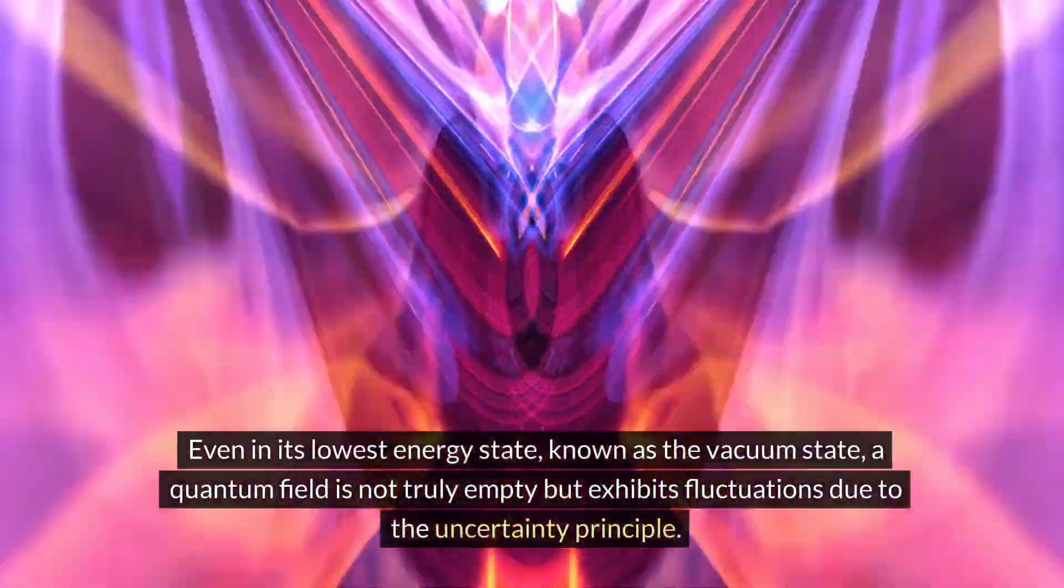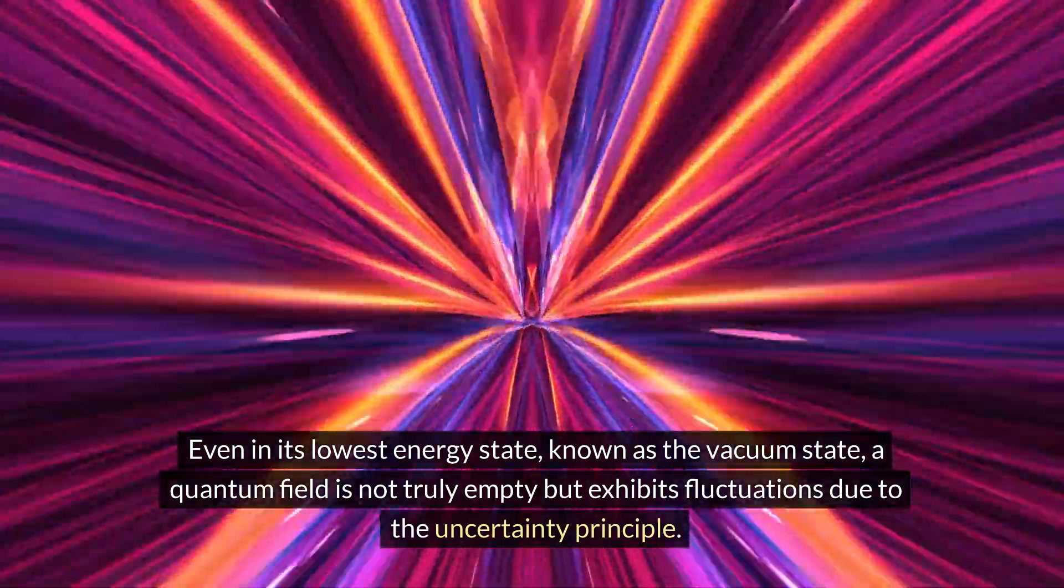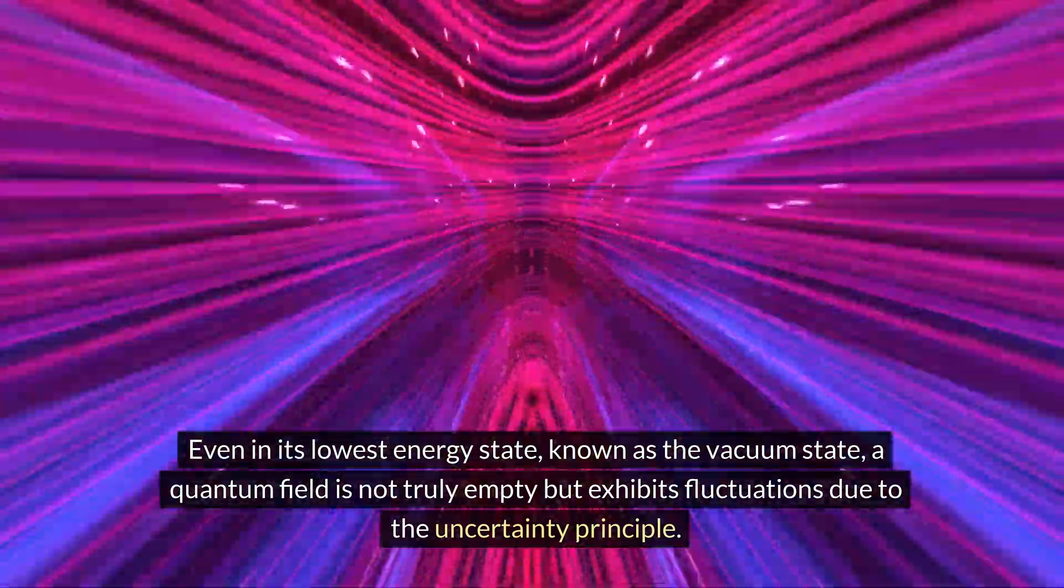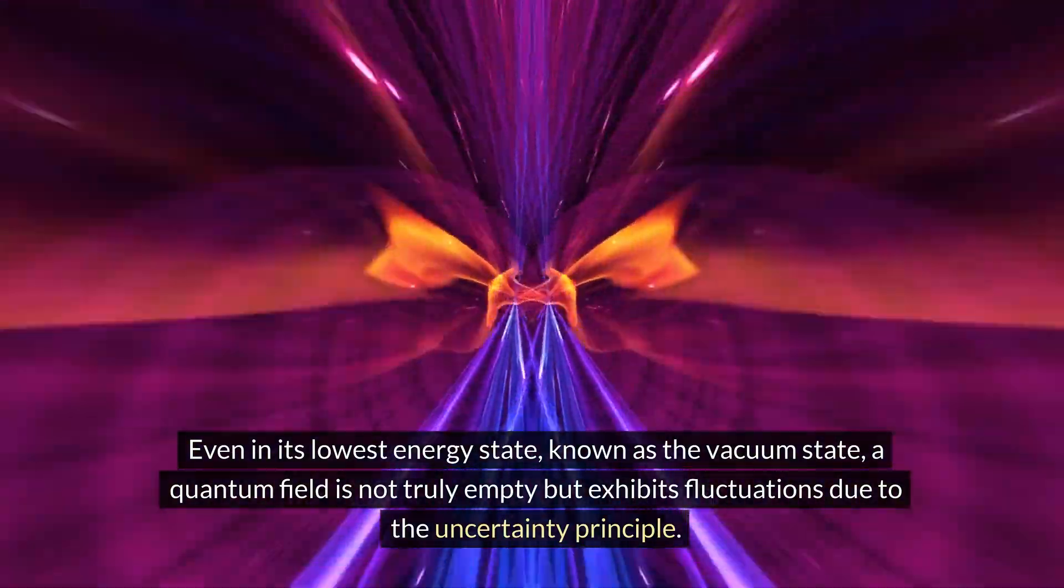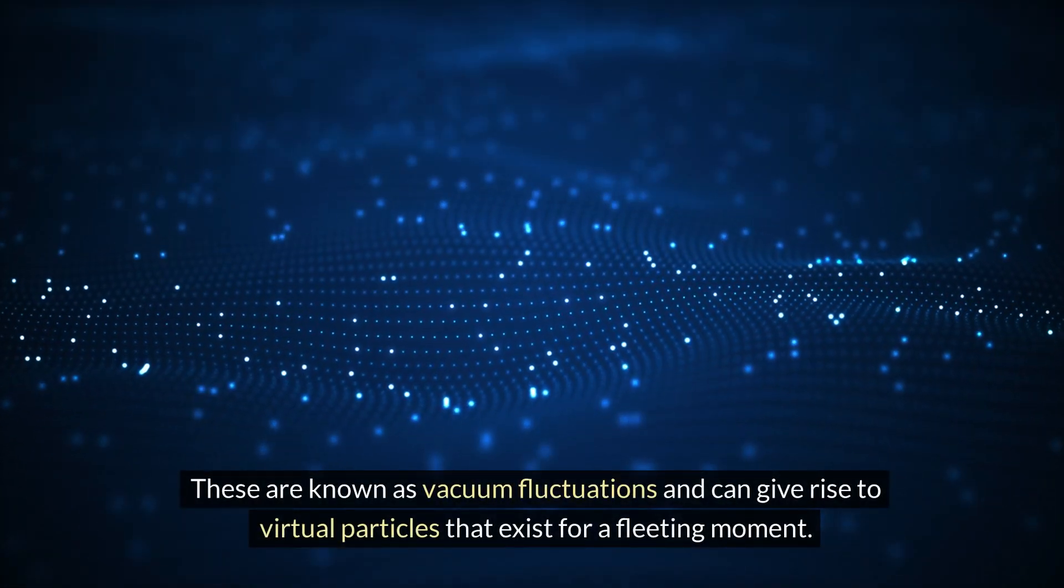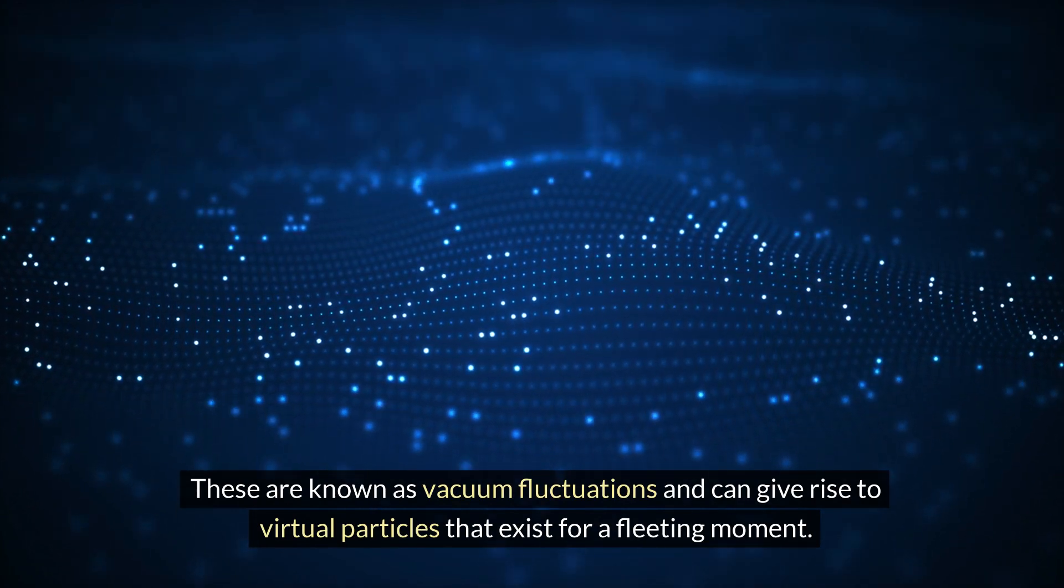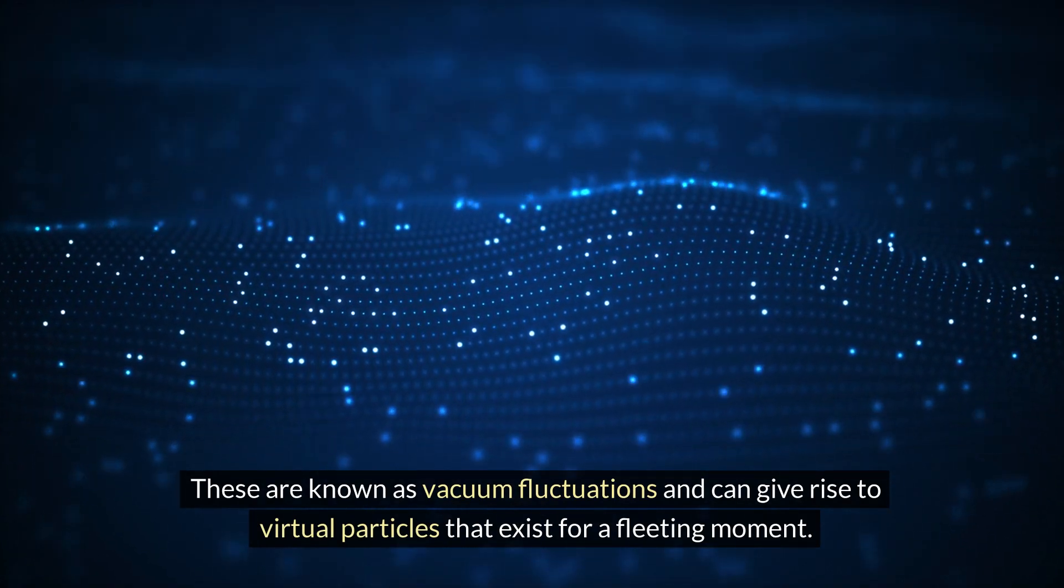Even in its lowest energy state, known as the vacuum state, a quantum field is not truly empty but exhibits fluctuations due to the uncertainty principle. These are known as vacuum fluctuations and can give rise to virtual particles that exist for a fleeting moment.